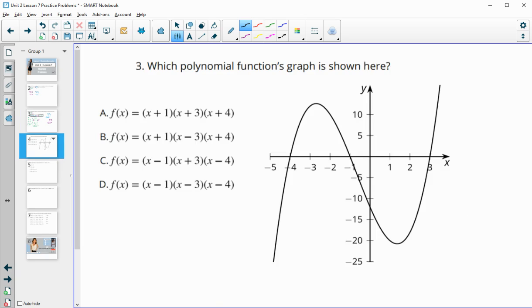Number 3, which polynomial function's graph is shown? We're going to be looking at these factors, and we can see the zeros here on the graph. Let's mark one of these zeros. I'm going to mark this zero at negative 4.